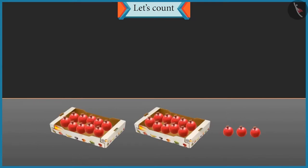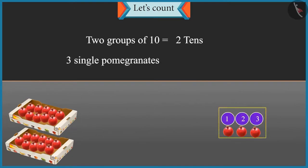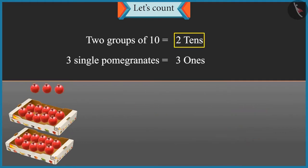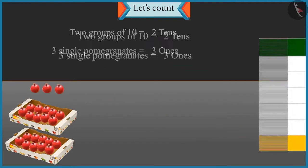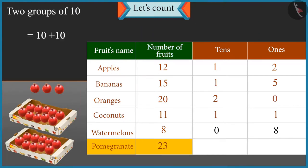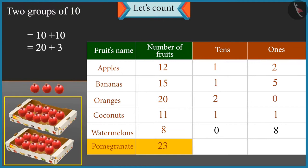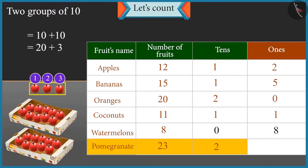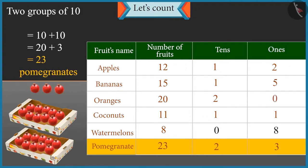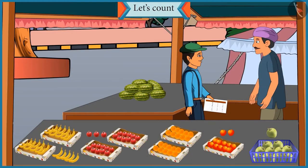Chotu, I have counted the pomegranates and placed them in groups of tens. Can you tell me how many pomegranates are there? Uncle, there are two groups of tens, that means two tens, and three single pomegranates, that means three ones. There are twenty-three pomegranates. Two groups of tens: ten and ten is twenty, and there are three more pomegranates, so twenty-one, twenty-two and twenty-three. There are twenty-three pomegranates. Absolutely right.